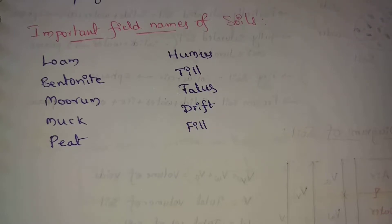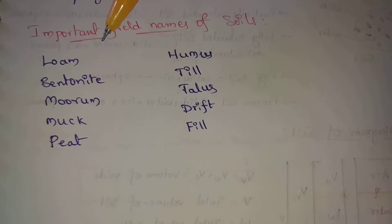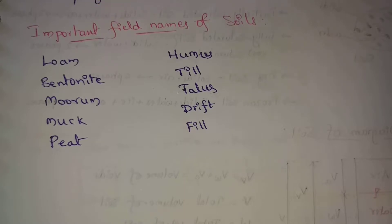The first one is loam. Loam is a mixture of sand, silt, and clay. Next one, bentonite. Bentonite is a chemically weathered volcanic ash.